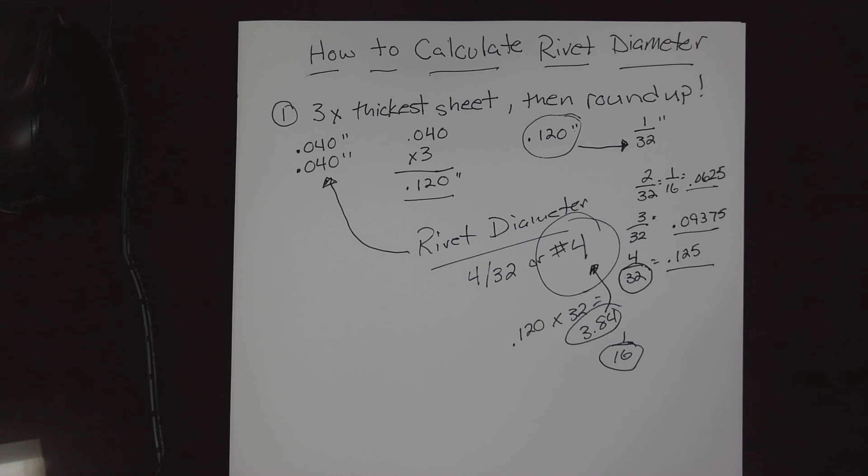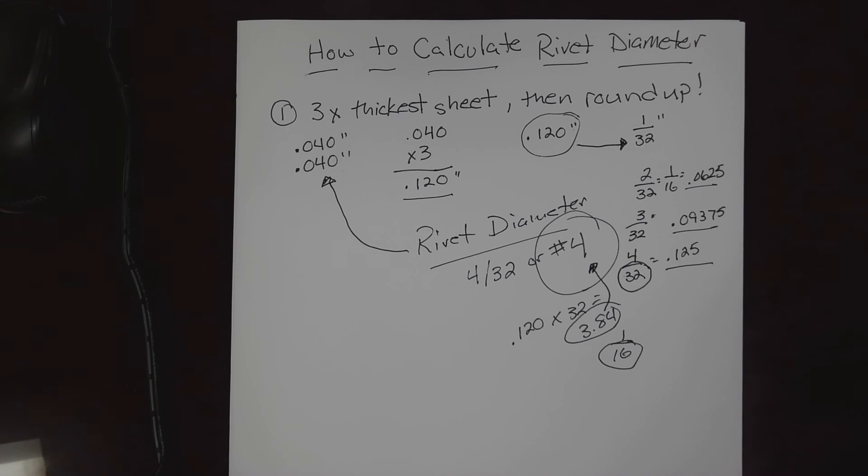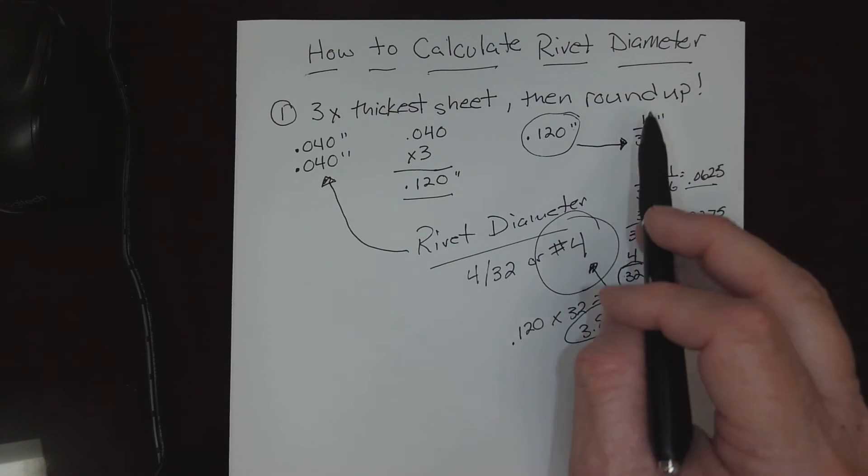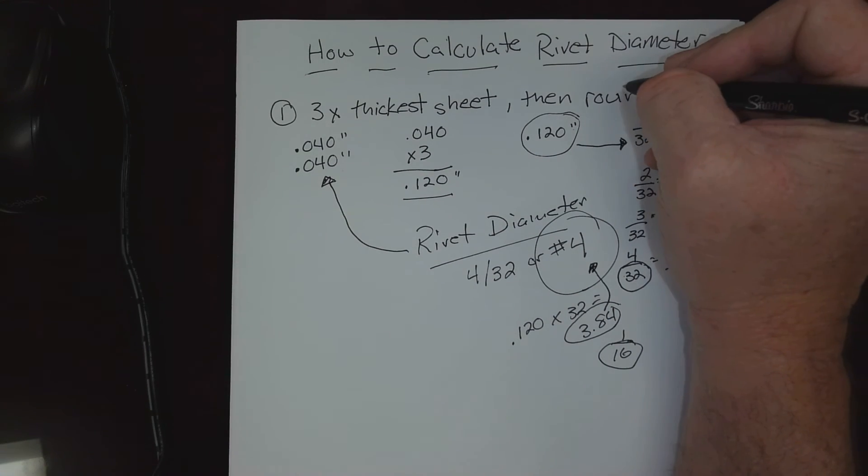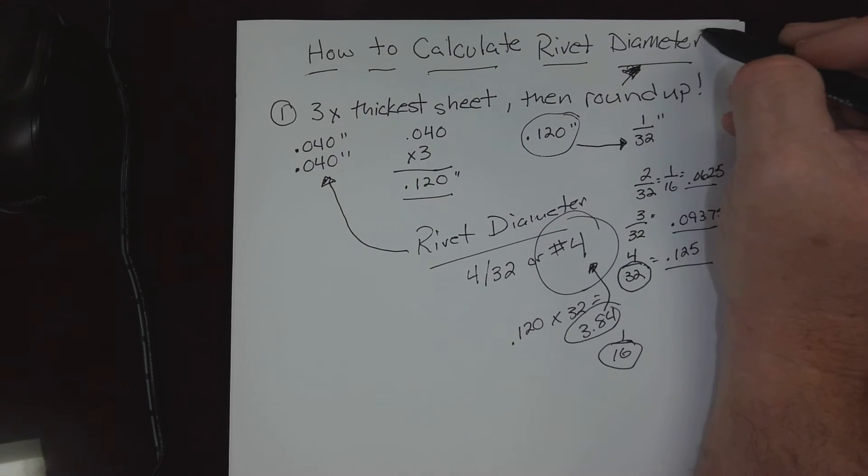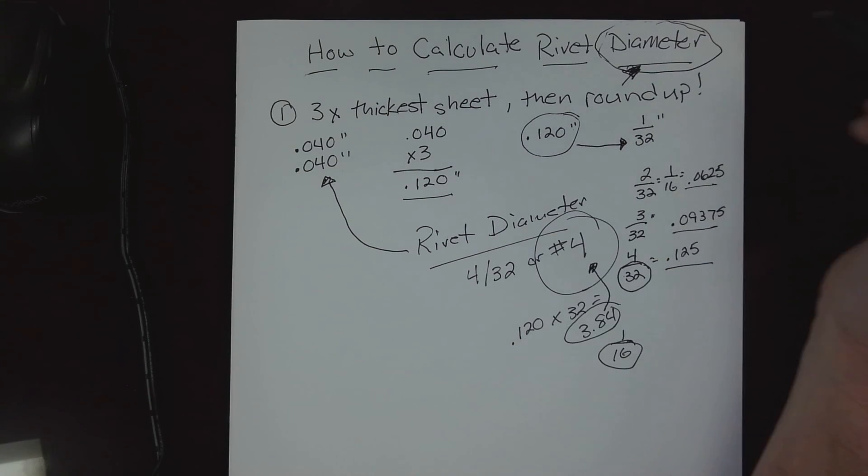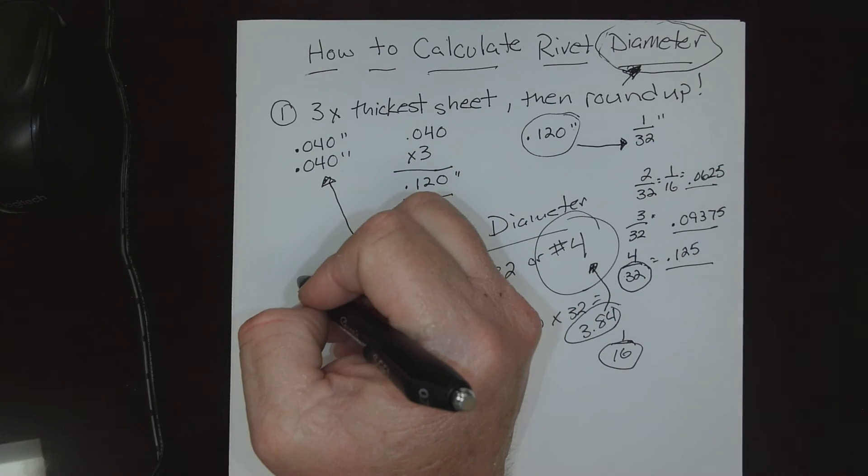Whatever you're comfortable with and most accurate with - well, that's the way I'd love to see you do it. So remember rule number one: three times the thickest sheet, then round up. We're looking for diameter first because when we do rivet calculations, we're going to need this information in order to determine our length.